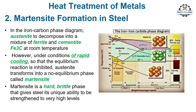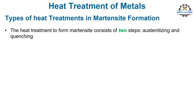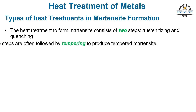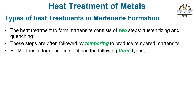Martensite is a hard, brittle phase that gives steel its unique ability to be strengthened to very high levels. The heat treatment to form martensite consists of two steps: austenitizing and quenching. These steps are often followed by tempering to produce tempered martensite. So the further three types of heat treatment are austenitizing, quenching, and tempering.